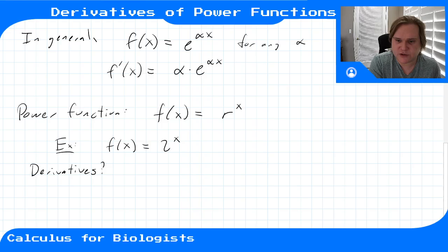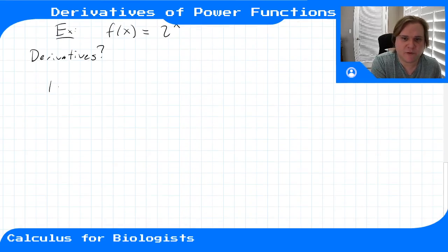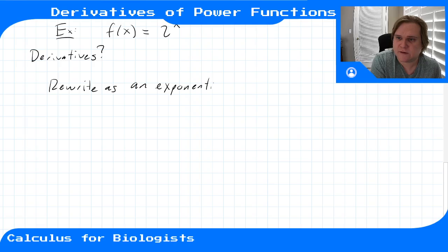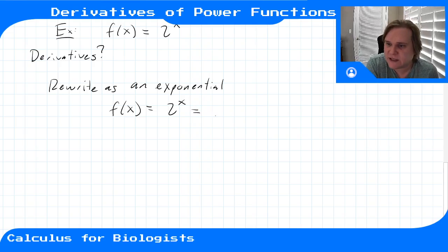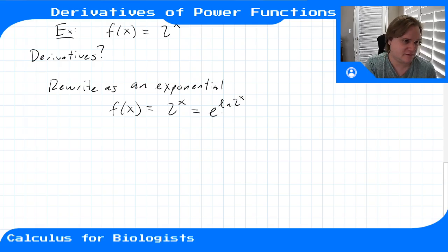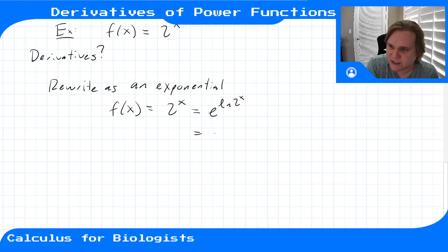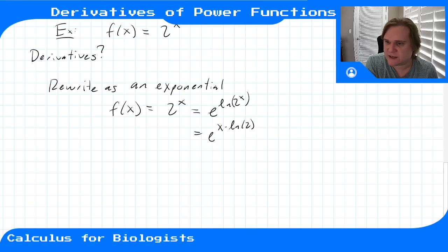The trick is to use what we know about exponentials. Step one: rewrite as an exponential. We have f(x) = 2^x, which is the same as e^(ln 2) raised to the x. We take the logarithm and then exponentiate both sides — they cancel and we're left with 2^x. We can factor this to get e^(x·ln 2), pulling x out because it's an exponent.